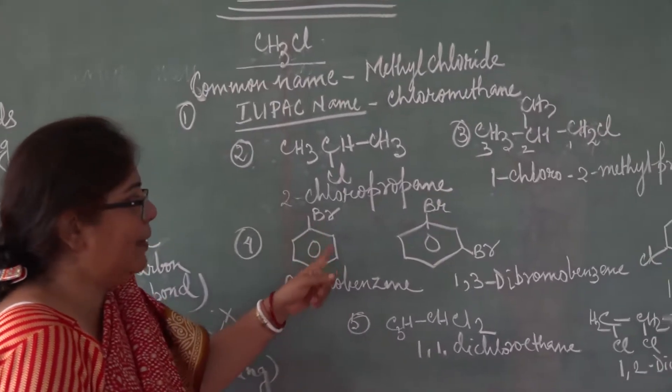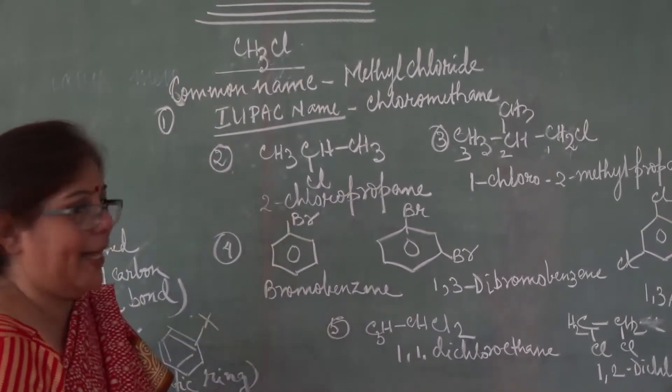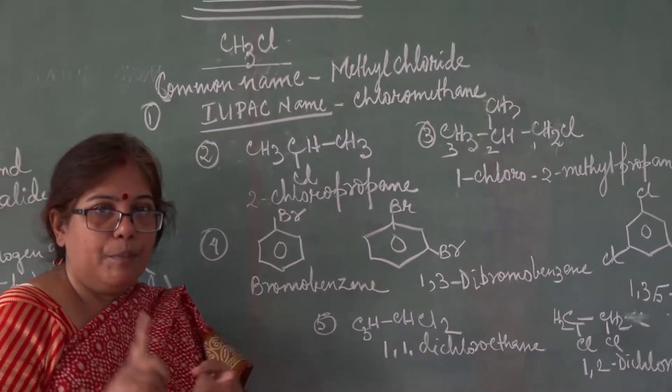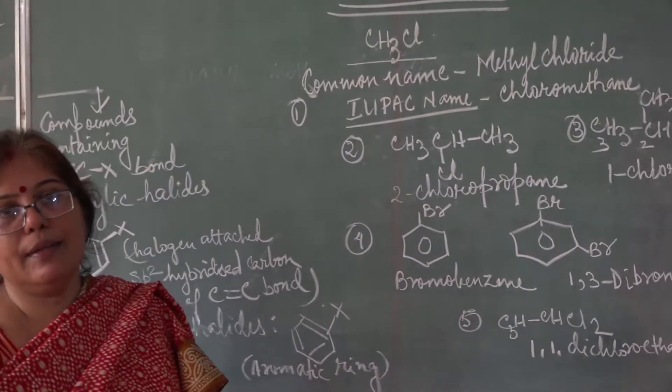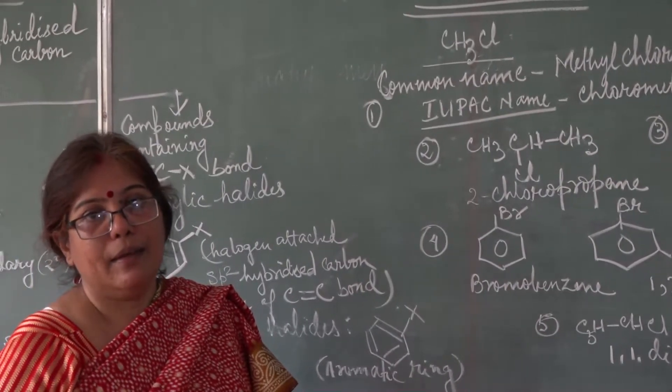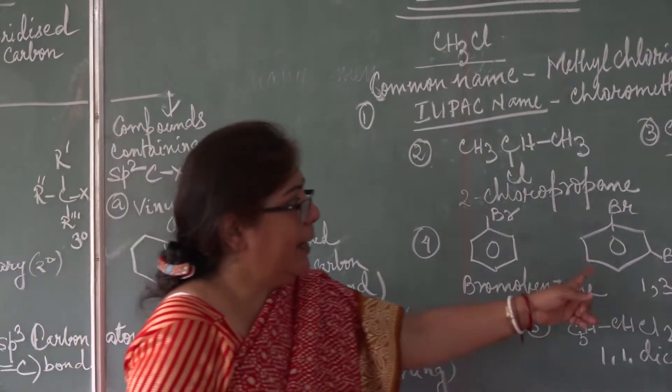Next, this one, benzene ring. Aromatic? Benzene ring, Br is attached. What will be the name? Bromobenzene. Benzene ring, Cl is attached. Chlorobenzene. Iodine is attached. Iodobenzene.